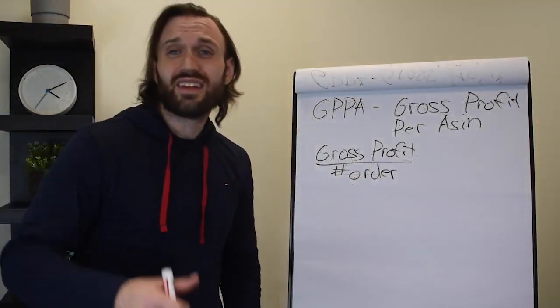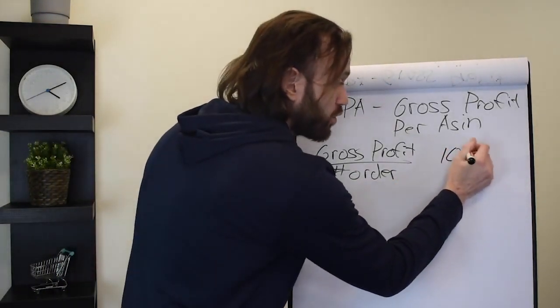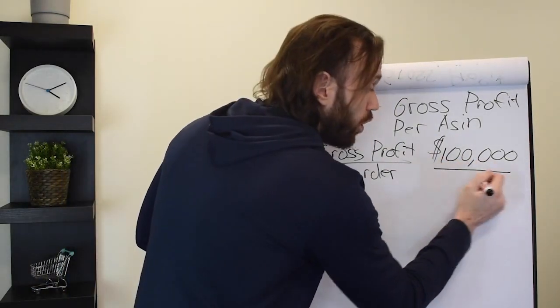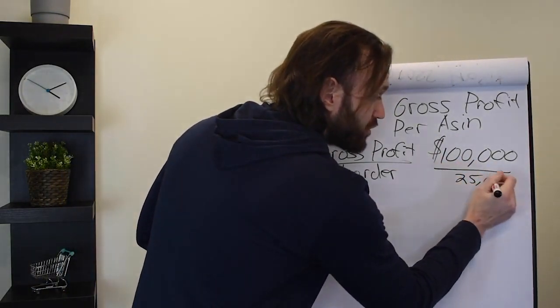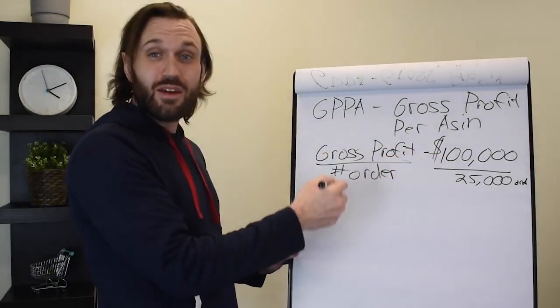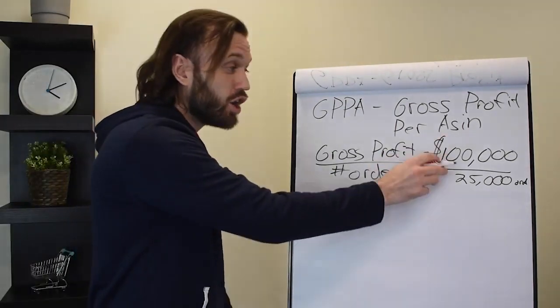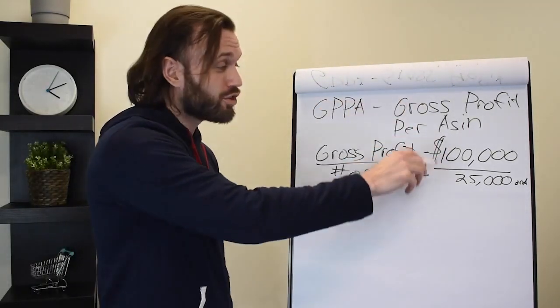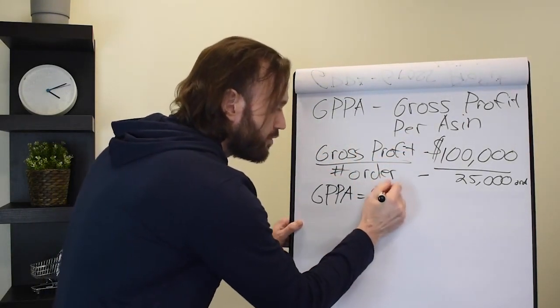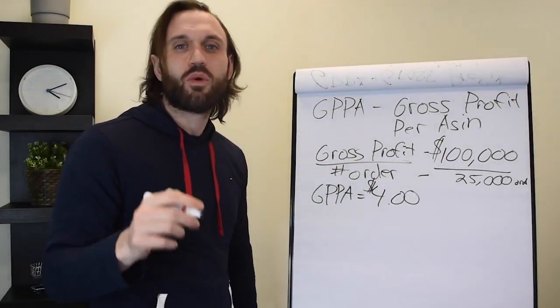You take gross profits and divide that by your number of orders. Let's say in the past 30 days you did $100,000 in gross profits, and in those same past 30 days you sold 25,000 orders. You would divide $100,000 by 25,000 orders, and your GPPA would be $4.